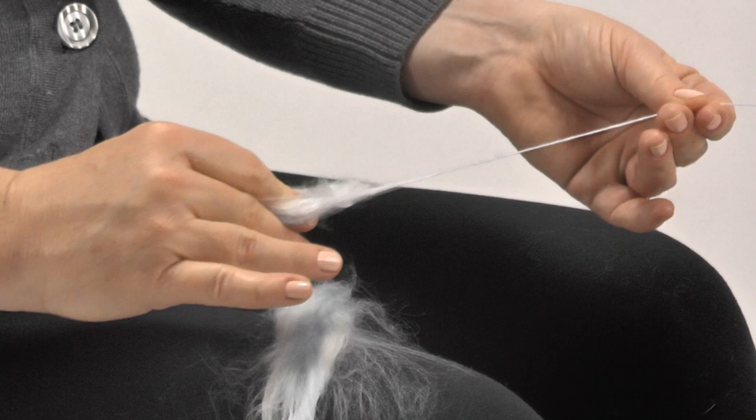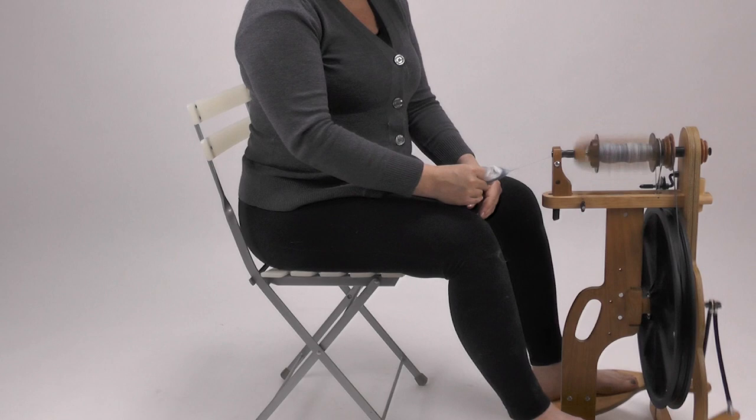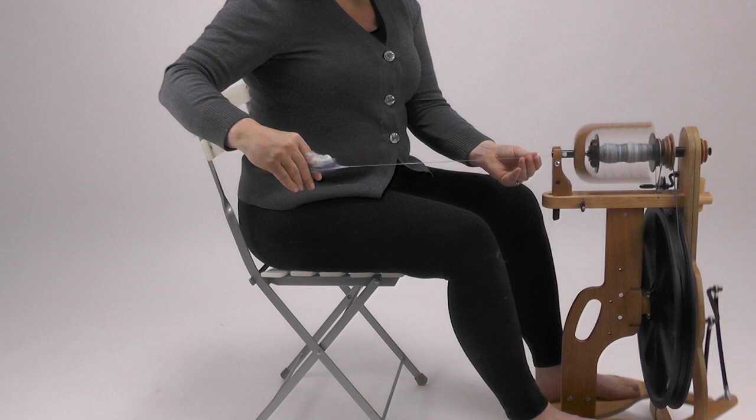When both hands are working together, you'll feel the twist approach your fiber hand. This is where the magic happens. Monitor the drafting triangle visually and move your fiber hand back to manage the number of fibers in the drafting triangle.